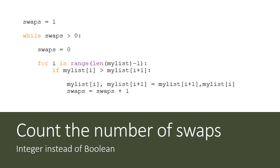And there is a variation that some programmers do instead of using a Boolean variable, they count the number of swaps. So they use an integer instead of a Boolean variable. So as long as the number of swaps is greater than zero.